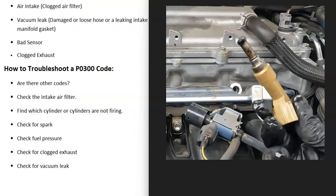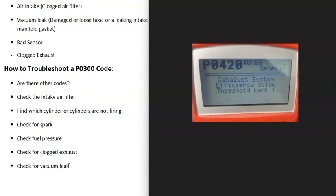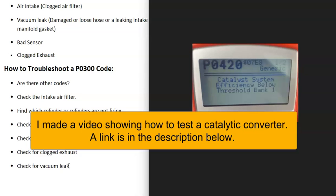Another thing to check is the catalytic converter. If it's old and clogged up, the engine has to work hard to push exhaust out, which can cause misfires. Usually you'll also get a code like P0420 (catalyst system efficiency below threshold, bank one). There are good YouTube videos on how to test the catalytic converter.